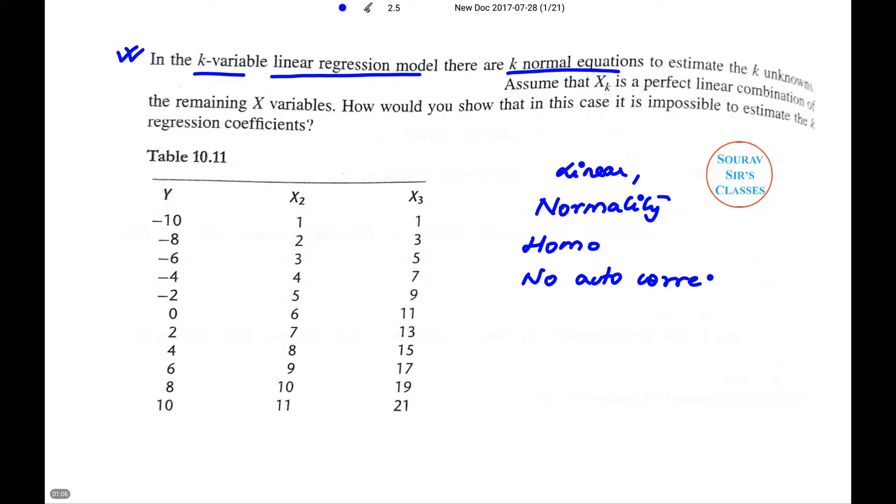And when we say normal equation, the equation that minimizes the sum of squares difference between the left and right side. So after having the recapitulation, let us move ahead. It is said in k variable linear regression model there are k normal equations to estimate the k unknowns.